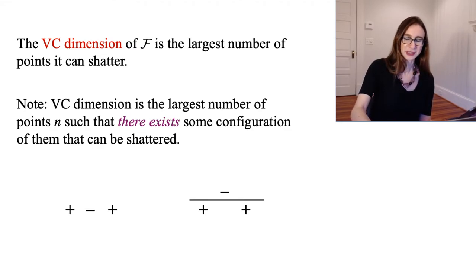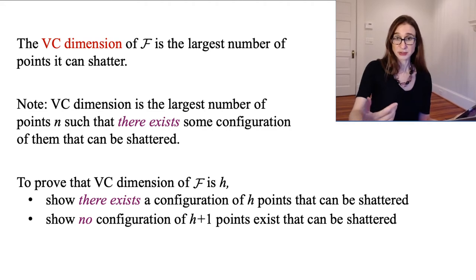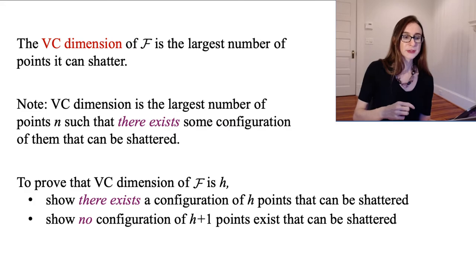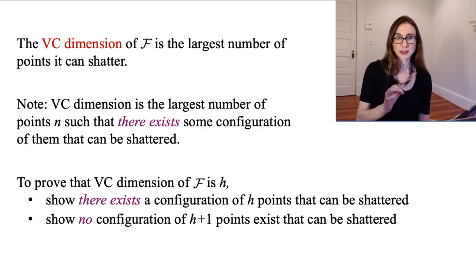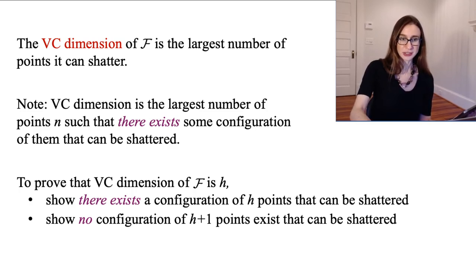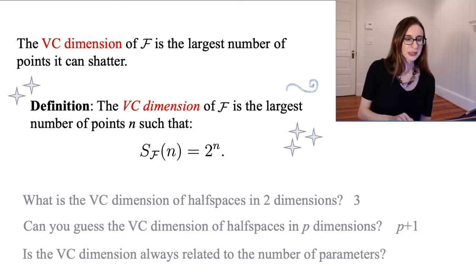On the left I placed the data so that you can't shatter them, and on the right I placed them so that you can. The only meaningful one is the one where you can shatter them. To prove that the VC dimension of f is a certain number h, you have to prove two things: first, that there exists a configuration of h points that can be shattered, and second, that there is no configuration of h+1 points that can be shattered. At that point you've pinned down the VC dimension as h.